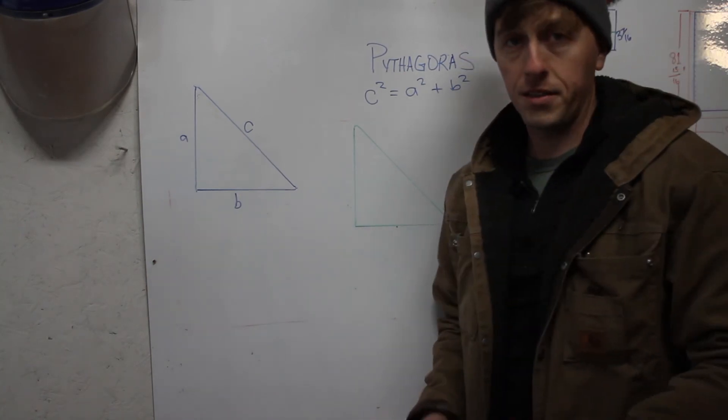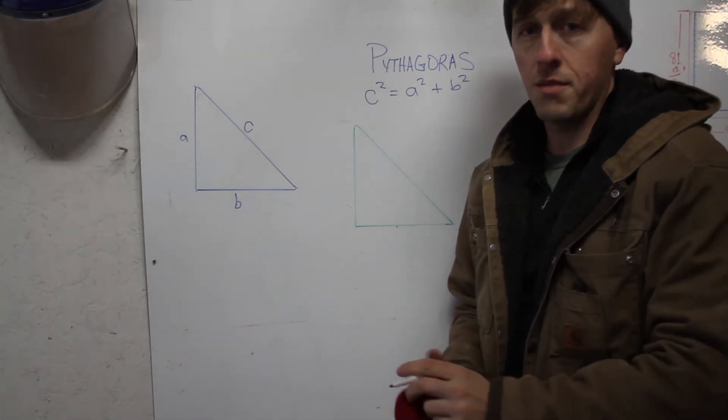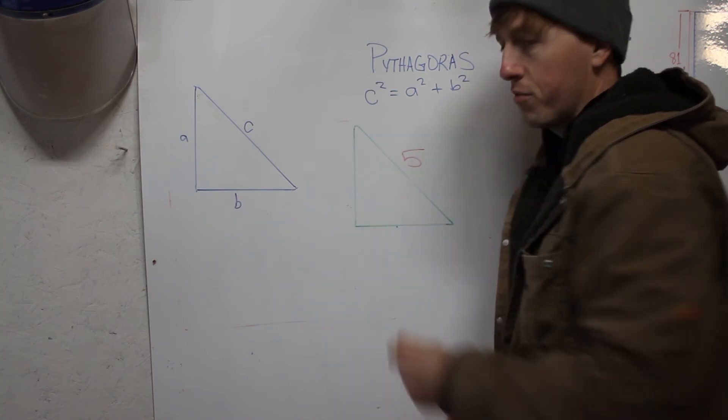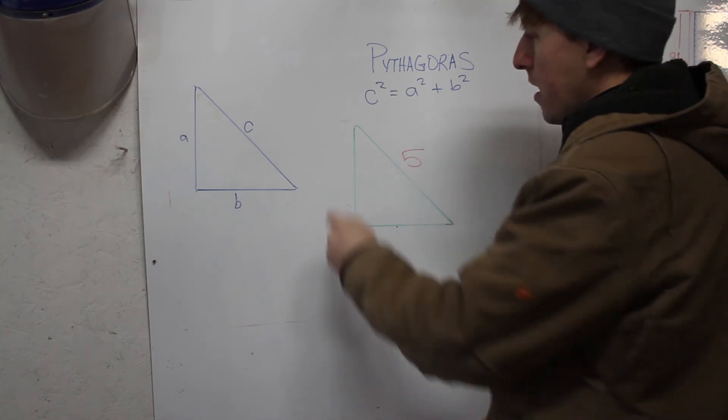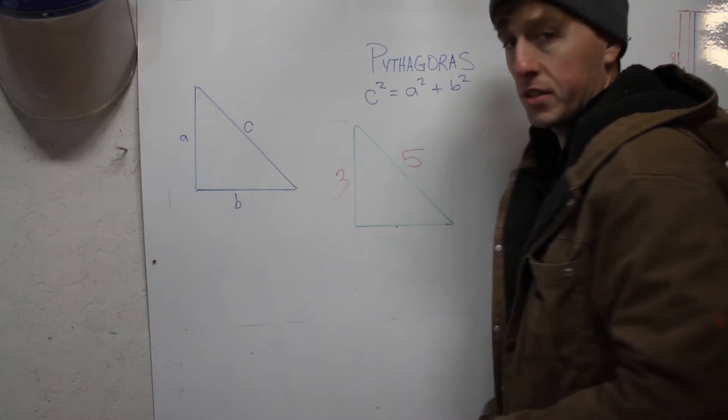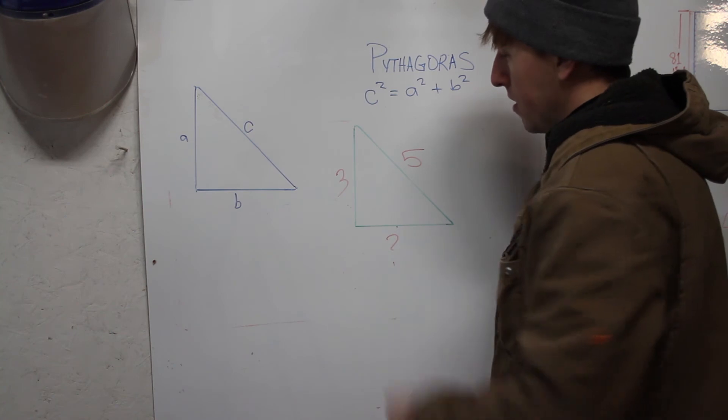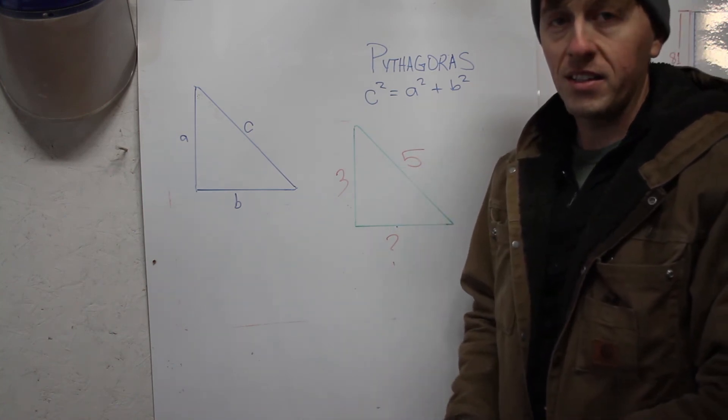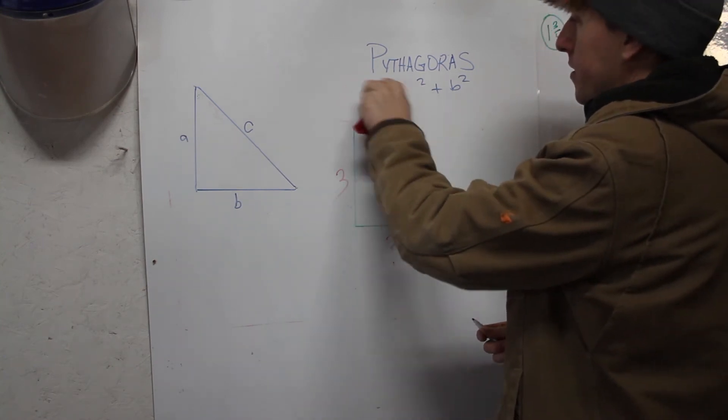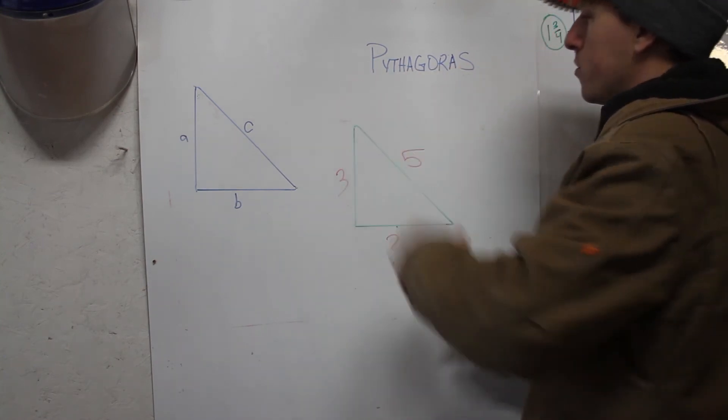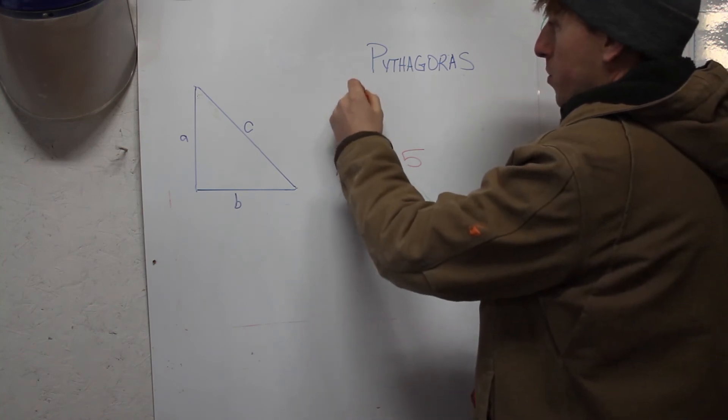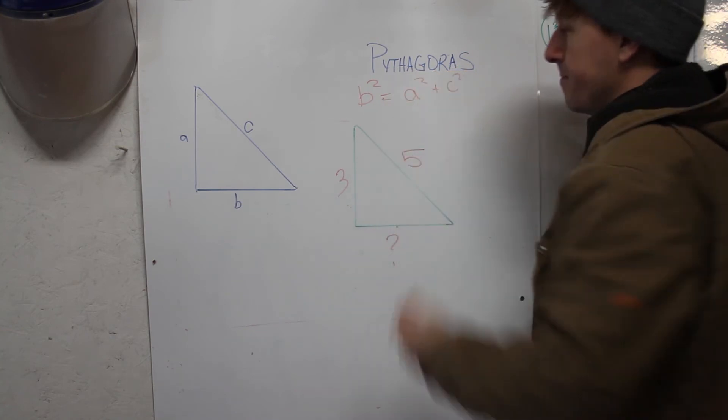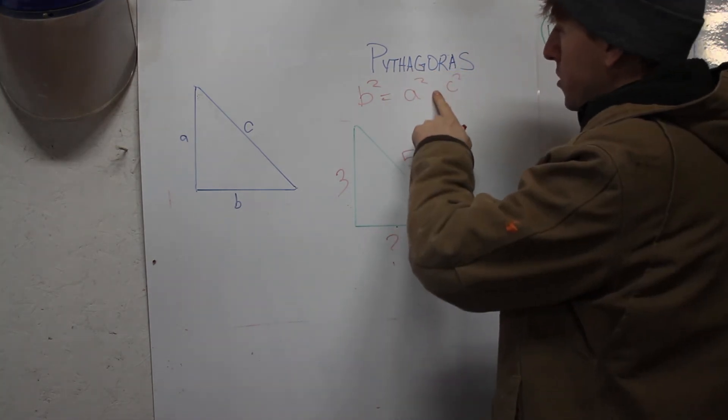All right, let's take a look at the next example. So this is an example where we actually have the hypotenuse. Let's say this is - we'll stick with our three-four-five because we've already solved it, we know what it is. We have the hypotenuse, we have one of the sides, but we don't have the base. Now this equation actually isn't going to work in that instance because it's designed to solve the wrong thing, and you can't just say B squared equals A squared plus C squared. That doesn't work either.